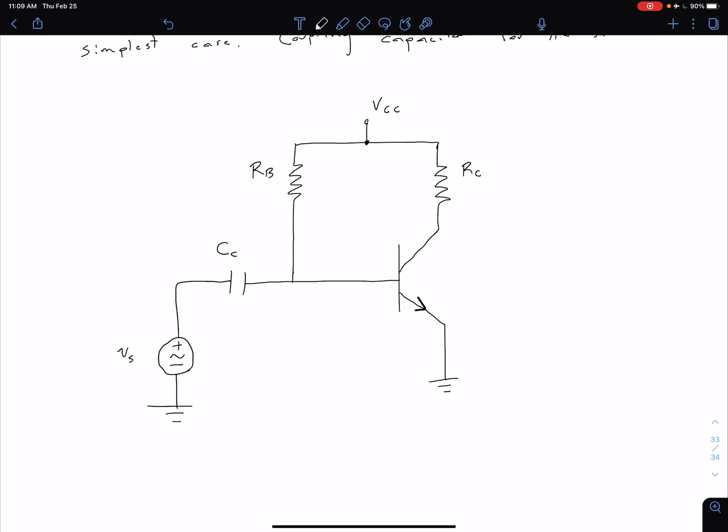A couple big differences between our previous circuit: you'll notice now our base resistor is connected up to VCC, using the same power source as our RC or collector side. If we have a large enough base resistor, we can still have our BJT in the forward active mode like we want for amplification.